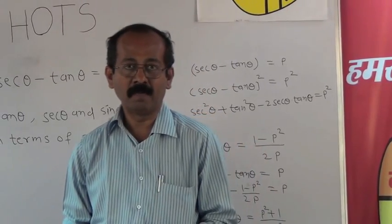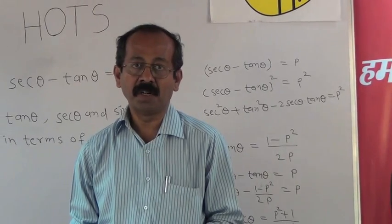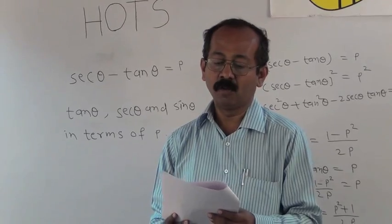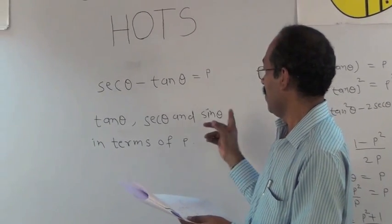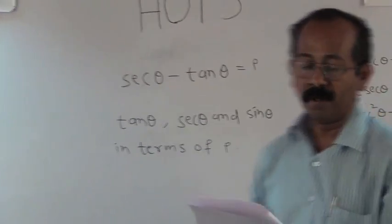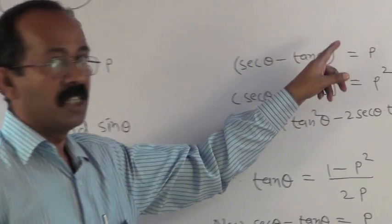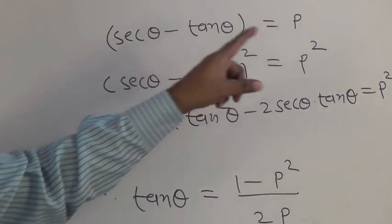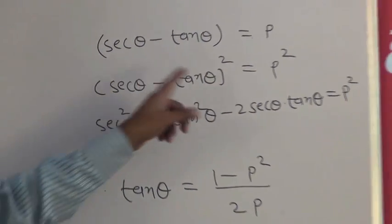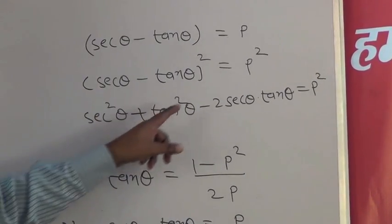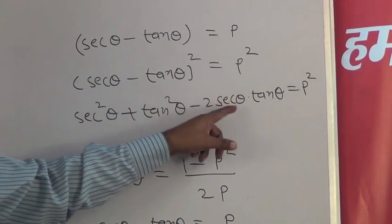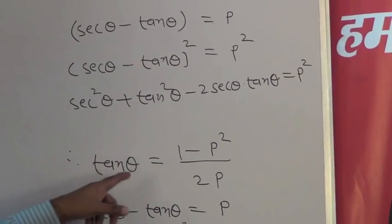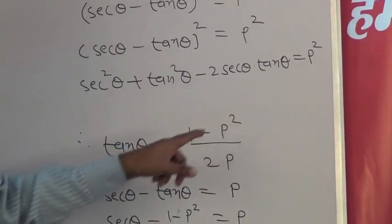Let us discuss the third example. This example is based on trigonometry. If sec θ - tan θ = P, obtain the values of tan θ, sec θ, and sin θ in terms of P. Now sec θ - tan θ = P, this is given. Squaring both the sides, we get (sec θ - tan θ)² = P². After expanding the bracket, we get sec²θ + tan²θ - 2 sec θ tan θ = P². After simplifying it, we get the value of tan θ = (1 - P²)/2P.